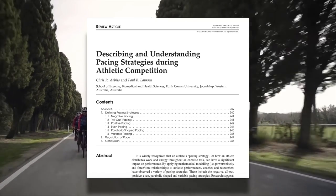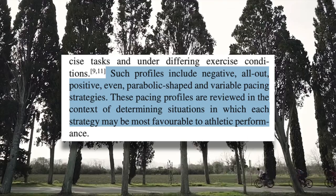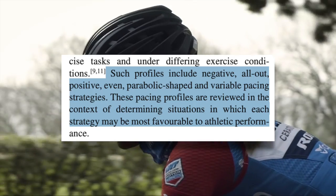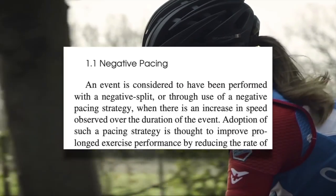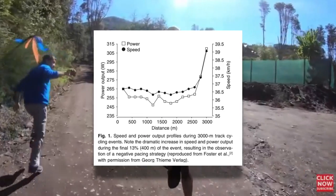This review article on pacing strategies defines each strategy and determines situations in which each strategy may be effective. First up: negative pacing. You may have heard runners talking about negative pacing, meaning that they ran the second half of the race faster than the first half. Negative pacing is when there is an increase in speed over the duration of the event. Many running world records are set with a negative split, and there may be a good reason for that.